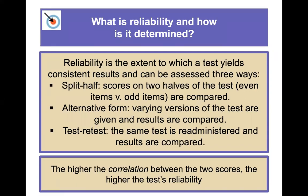Reliability is the extent to which a test yields consistent results, and it can be assessed in three ways: split-half (comparing scores on two halves of the test, such as even versus odd items), alternative form (using varying versions like Form A or Form B), and test-retest (taking the same test at different points in time, spaced far enough apart to avoid practice effects). The higher the correlation between two scores, the higher the test's reliability.